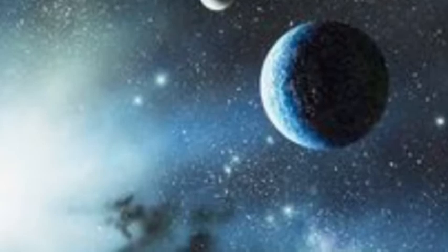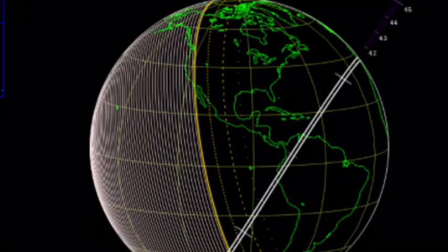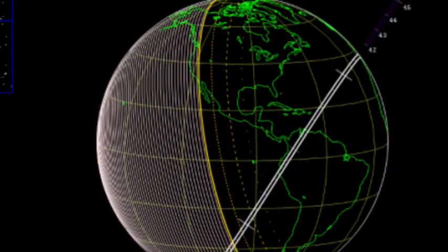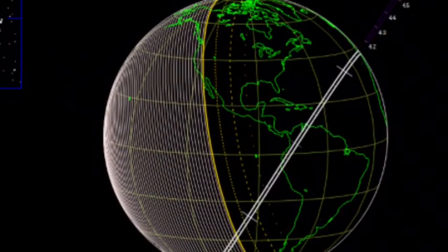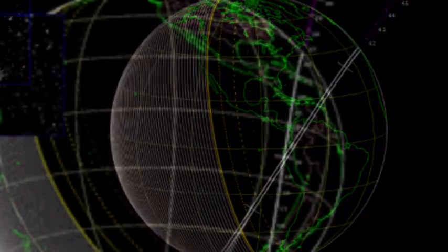According to the International Occultation Timing Association (IOTA), this will cause the star to momentarily vanish from sight. The moment of occultation is expected to occur around 5:30 AM GMT/UTC on Tuesday, or 10:30 PM MST on Monday, February 18th.